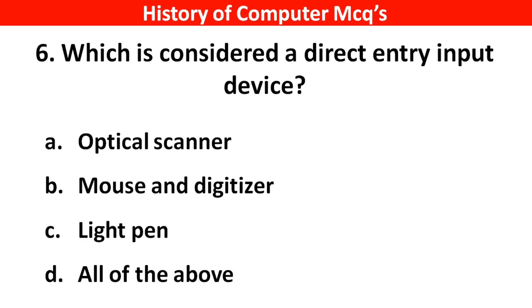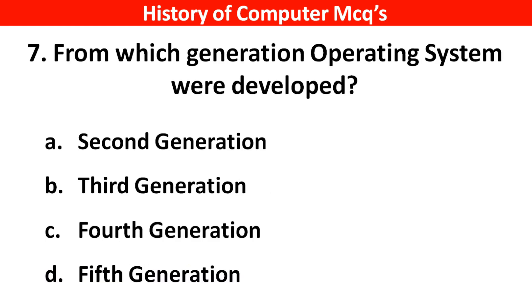Next question. Which is considered a direct entry input device? Options A: Optical scanners, B: Mouse and digitizer, C: Light pen, D: All of the above. Right answer is option D, All of the above.